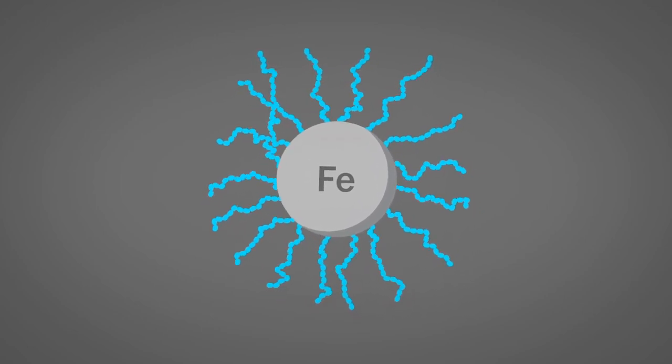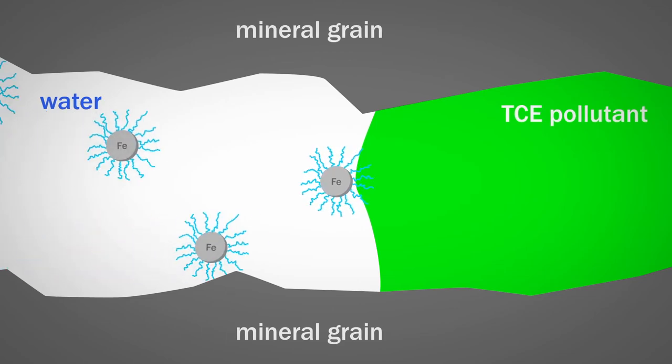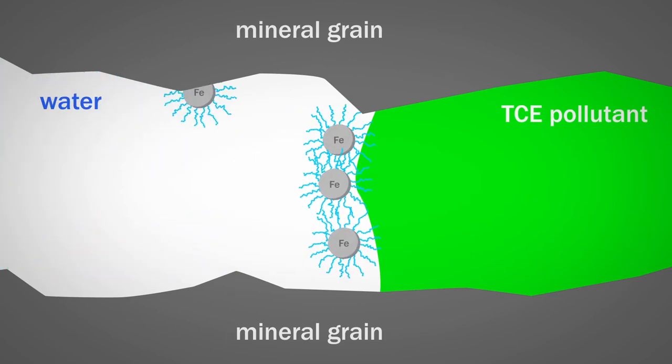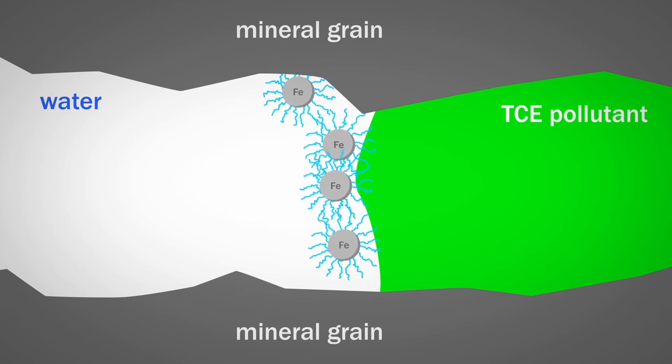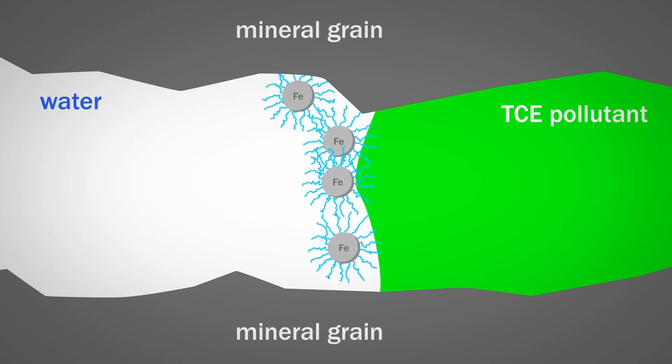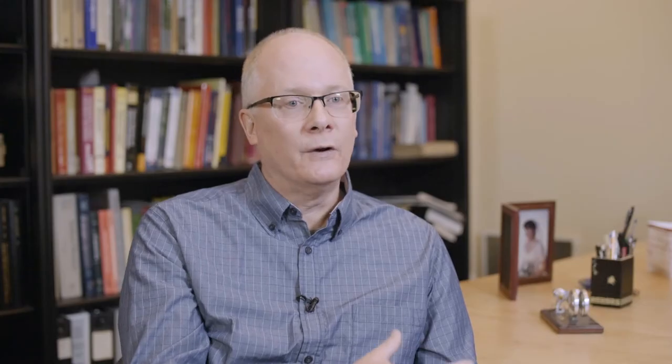These polymers would recognize the surface of the pollutant and help those particles adhere to the surface and accumulate there. Once there, they would react with the pollutant, convert it to non-toxic compounds, while the iron particles essentially just rust away. In thinking about this, we realized that we should be able to design nanoparticle polymer brushes that would also be able to adhere very strongly to a solid surface.